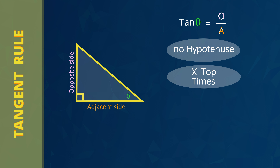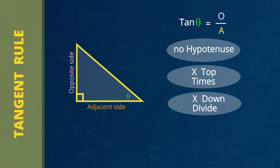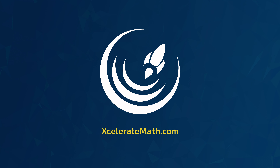Now let's summarize the main points. The tangent rule is tan theta equals O divided by A. It's easy to spot a triangle where the tan rule is used because there's no hypotenuse in the tan rule and there'll be no numbers and no X on the hypotenuse. In the working, when X is on the top of the fraction, you times in the next line — T for top, T for times. When X is down on the bottom of the fraction, you divide in the next line — D for down, D for divide. And when you want the angle, you work in reverse by pressing shift on the calculator. Thank you for watching this video.